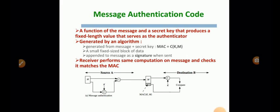So what is MAC? MAC is Message Authentication Code. It is a function of the message and the secret key that produces a fixed length value that serves as an authenticator. It is generated by algorithm. It is generated from the message plus the secret key. Normally to generate a MAC value, you have to generate it from the message as well as the secret key. That is, MAC is generated by using the formula MAC equals C of K, M, where K is the key and M is the message.